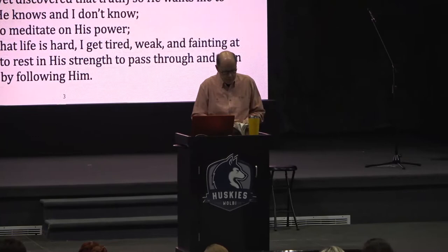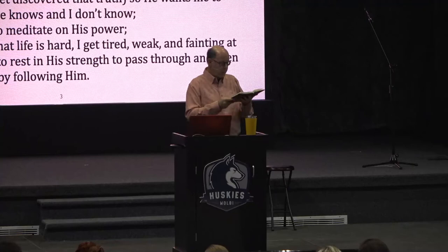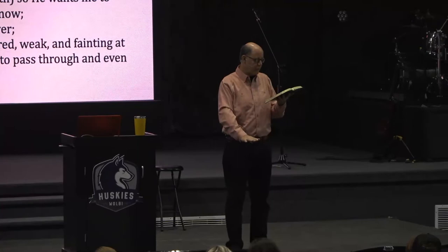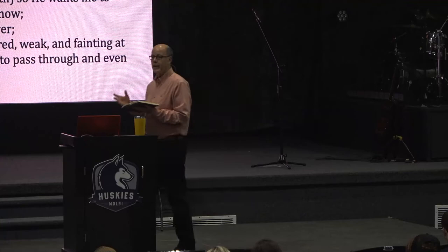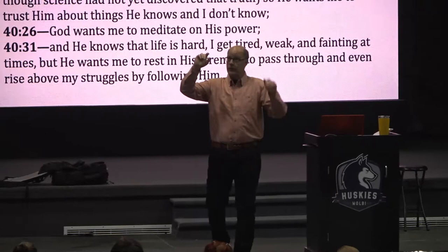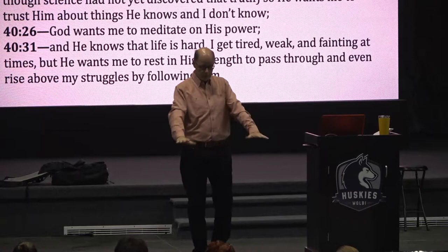Then verse 22 — look at that. Isaiah 40:22 says: 'It is he who sits above the circle of the earth, and its inhabitants are like grasshoppers, who stretches out the heavens like a curtain and spreads them out like a tent to dwell in.' That's a declaration of God as the creator. Right now God is not off somewhere 16.4 billion light years away — he's right here, sitting above the circle of the earth.